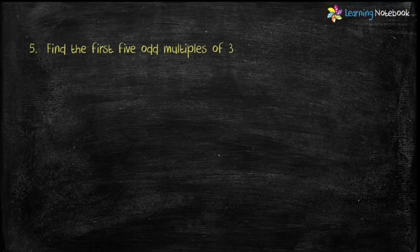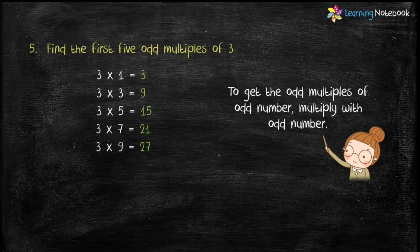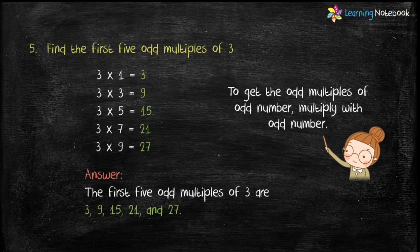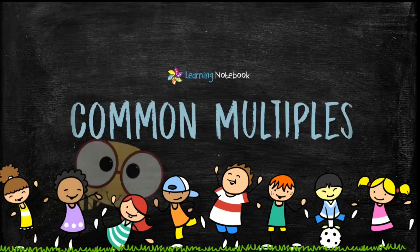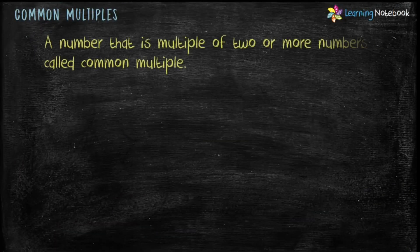Question five: find the first five odd multiples of three. In this question we have to find the first five odd multiples. Since three is an odd number, we will multiply three by odd numbers to get odd multiples. So let's multiply three by 1, 3, 5, 7, and 9. Therefore the first five odd multiples of three are 3, 9, 15, 21, and 27.